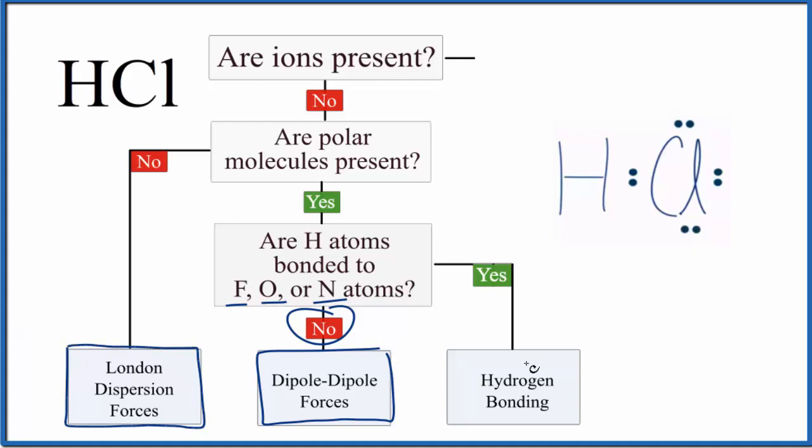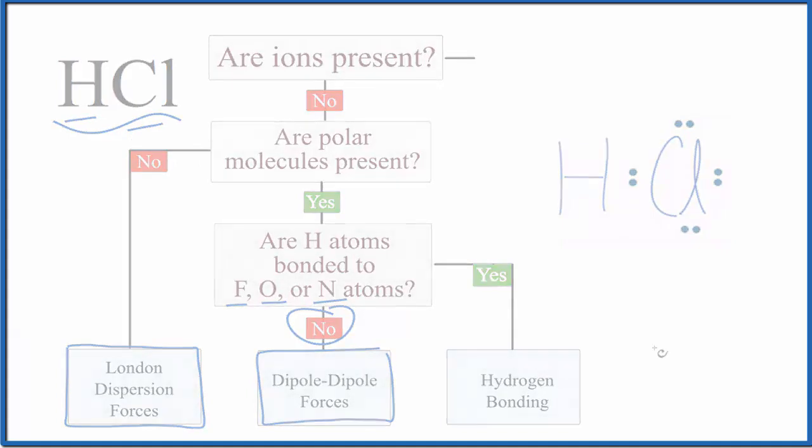Note that we don't have any hydrogen bonding here for HCl, and that's because we don't have fluorine, oxygen, or nitrogen bonded to the hydrogen. Chlorine is a fairly large atom, so we don't have hydrogen bonding. This is Dr. B with the intermolecular forces for HCl, hydrogen chloride. Thanks for watching.